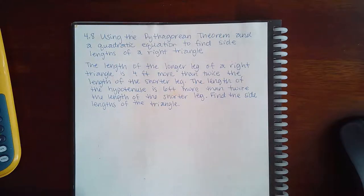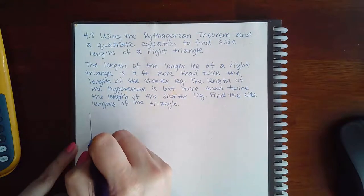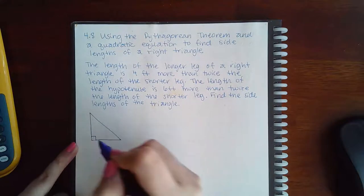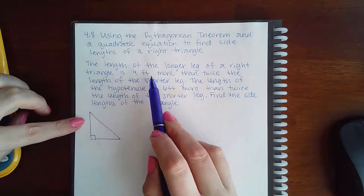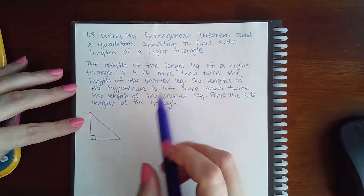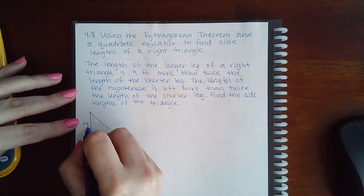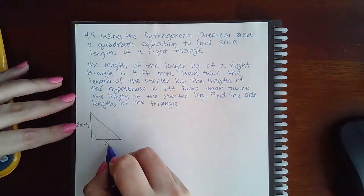So the length of the longer leg, so we are talking about a right triangle, so let me draw my right triangle first. And it says the length of the longer leg of a right triangle is 4 more than twice the length of the shorter leg. So we're going to say this one is 4 more than twice the shorter leg. We'll let this be the shorter leg.